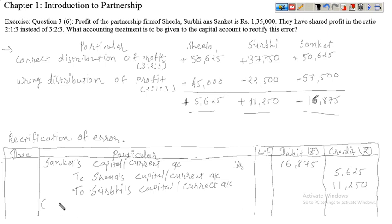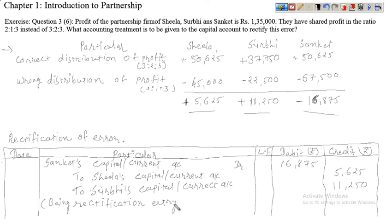So hum narration kya karenge? Narration rahega: 'Being rectification entry for the wrong profit distribution.' Thank you.